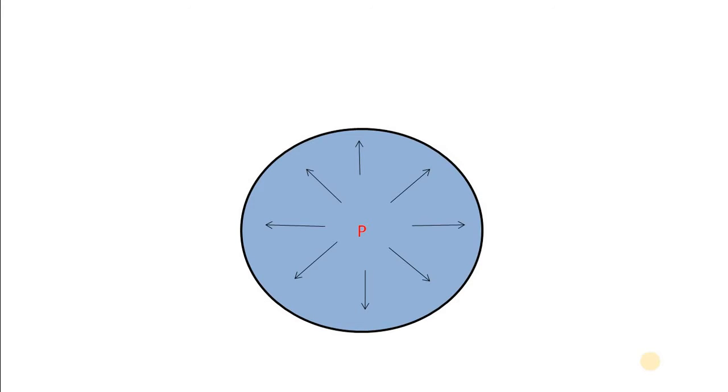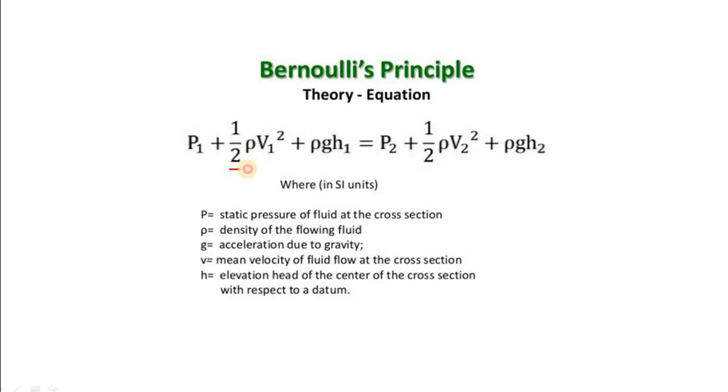Here, P denotes the static pressure of air. That means when air has no movement, this pressure is equal in each direction. Second, this is kinetic pressure, that means thrust which is produced when air is moving, and this is potential pressure. As density of air is very low, we will neglect this in our discussion.